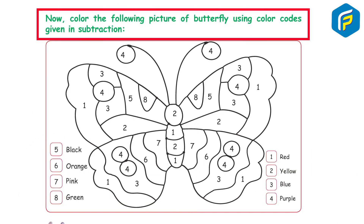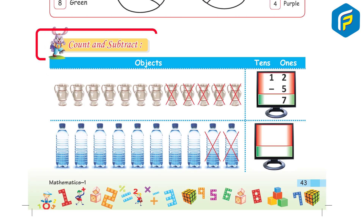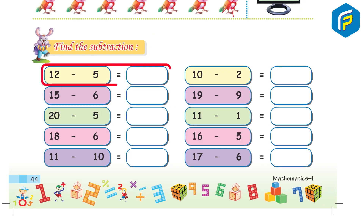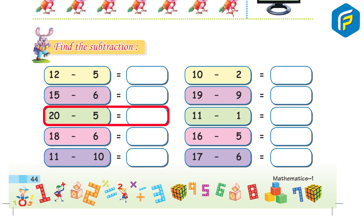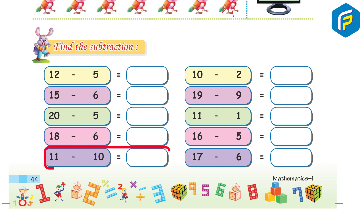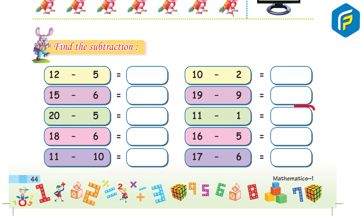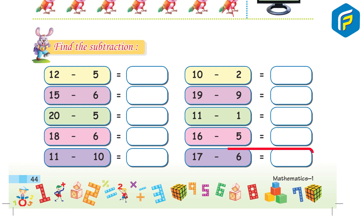Now color the following picture of a butterfly using color codes given in subtraction. Count and subtract objects using tens and ones. Find the subtraction: 12 minus 1, 15 minus 6, 20 minus 5, 18 minus 6, 11 minus 10, 10 minus 2, 19 minus 9, 11 minus 1, 16 minus 5, 17 minus 6.